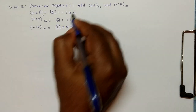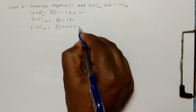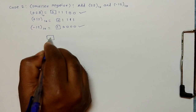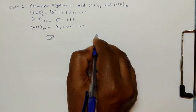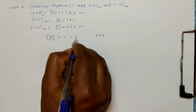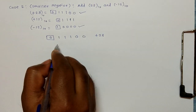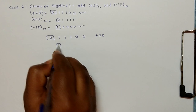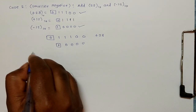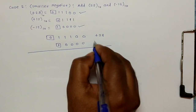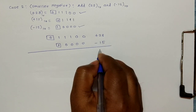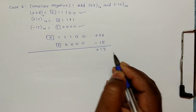We have to add plus twenty-eight and minus fifteen. Writing the addition: the sign bit of plus twenty-eight is zero, followed by one one one zero zero. The sign bit of minus fifteen is one, and the other bits are zeros.